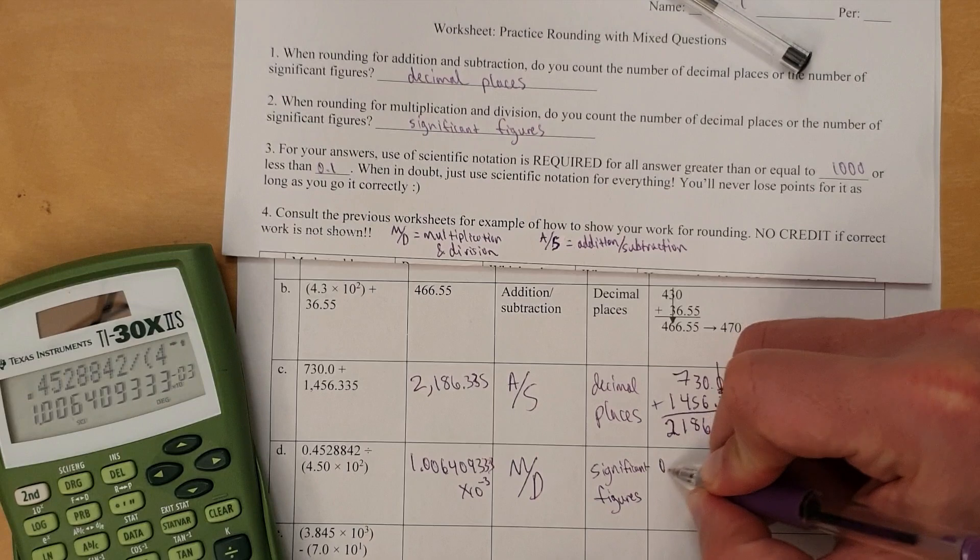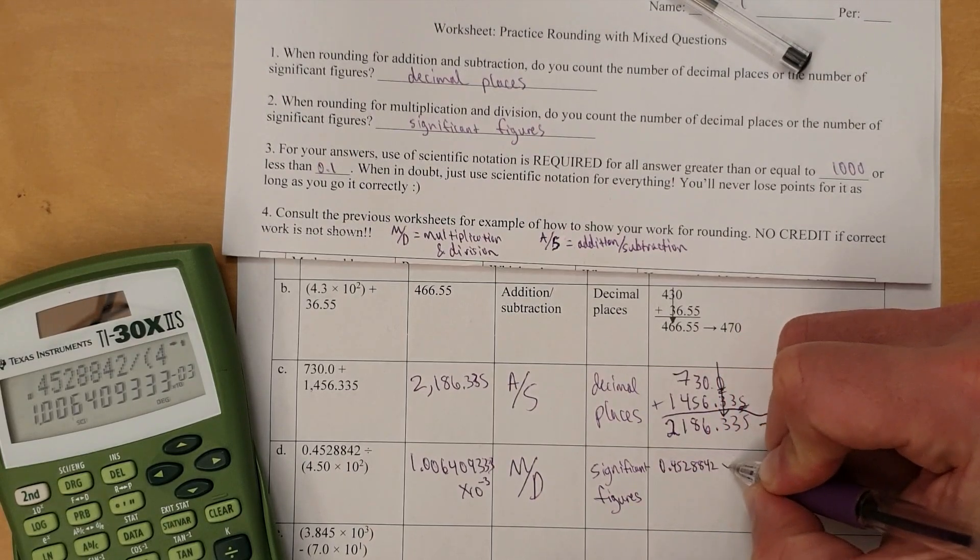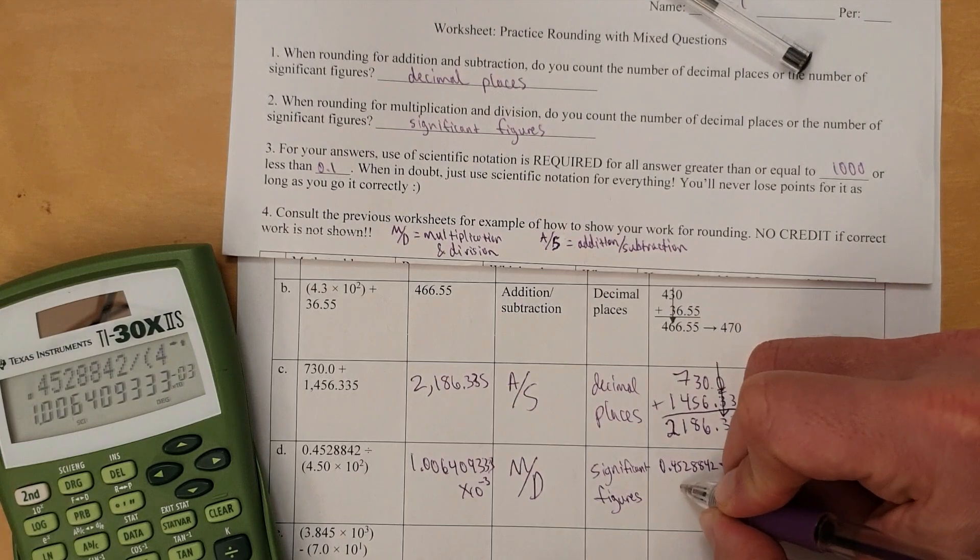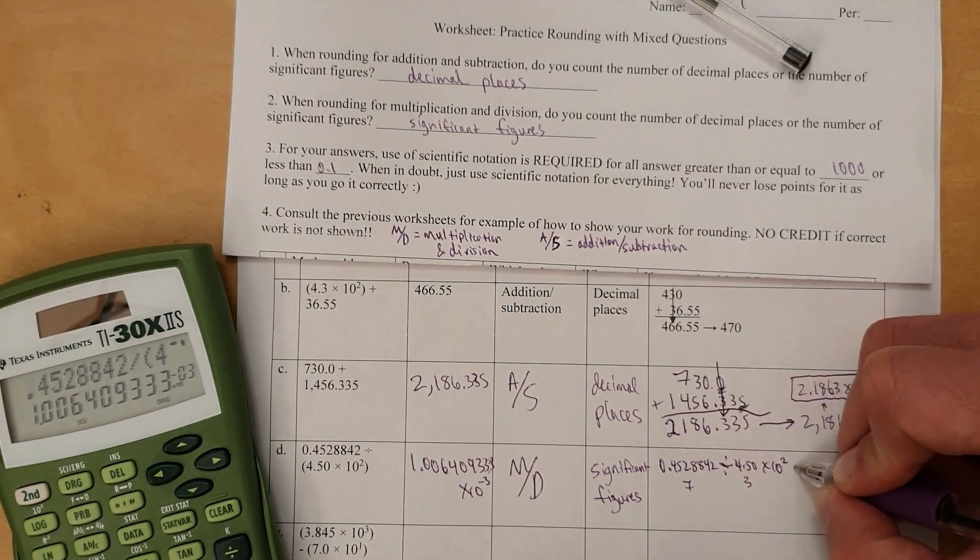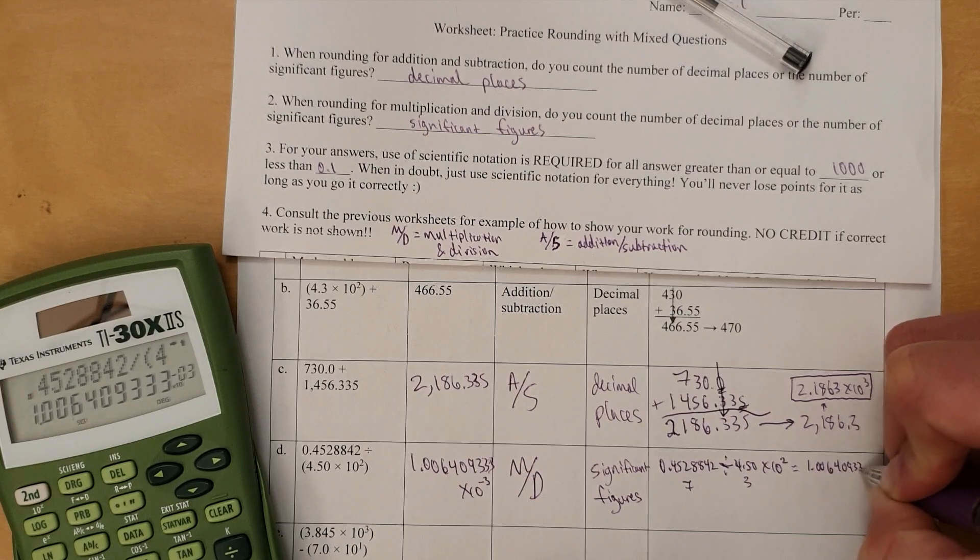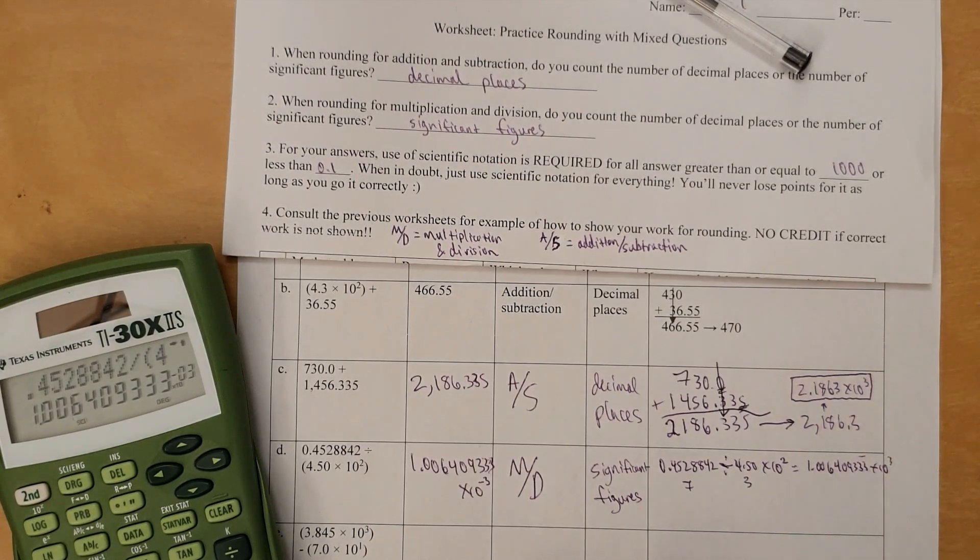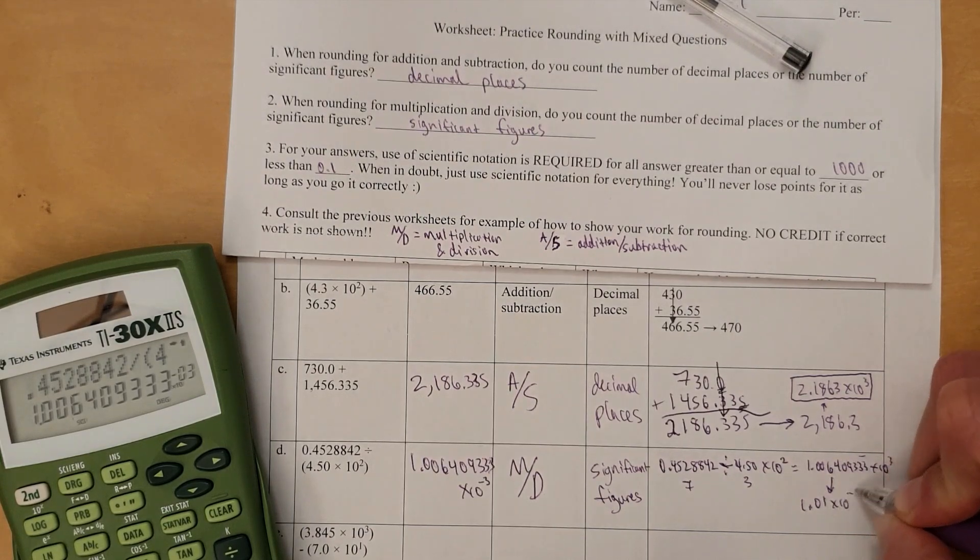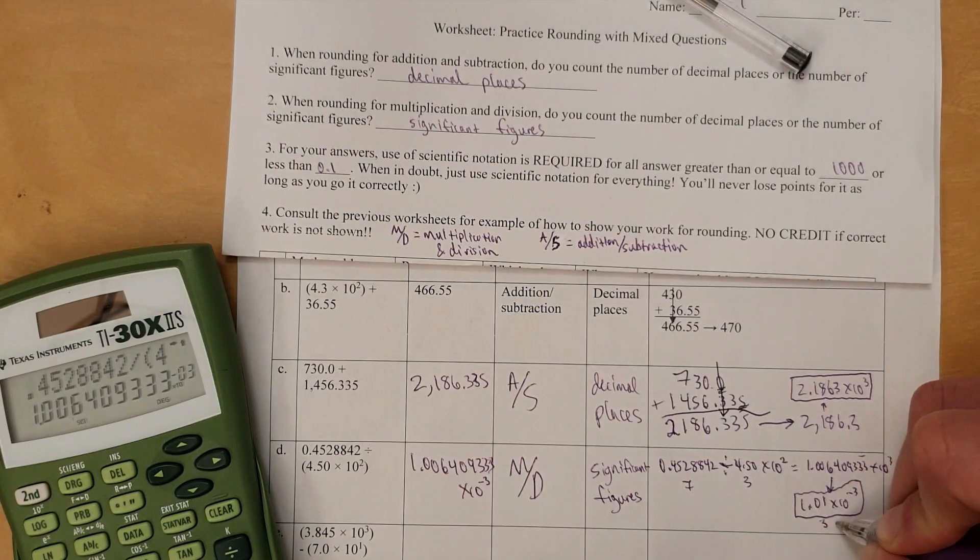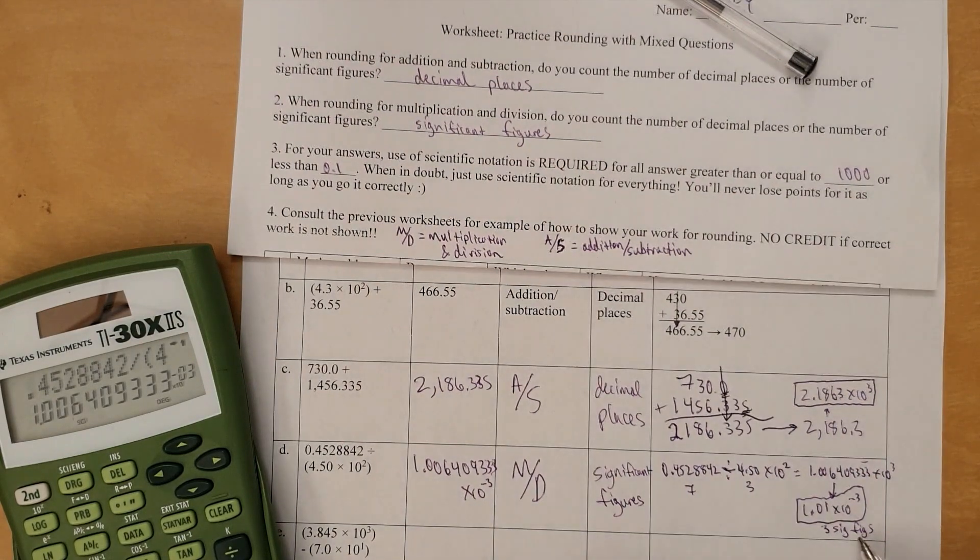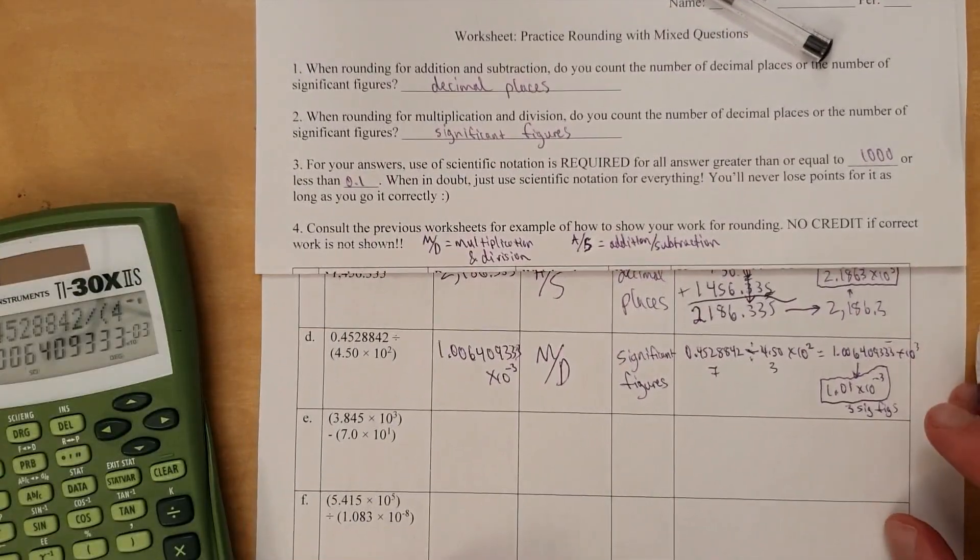All right, so 0.4528842 divided by 4.50 times 10 to the second. That's 7 significant figures. 3 significant figures. This is 1.006409333 times 10 to the third. That is going to round to 3 sig figs. So 1.01. Yeah, that 0 is next to a 6, so it rounds up. Times 10 to the negative third. That gives us 3 sig figs.